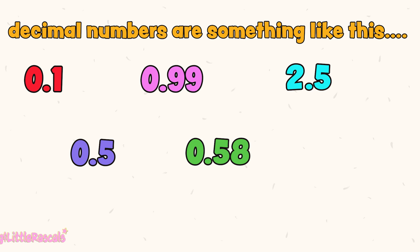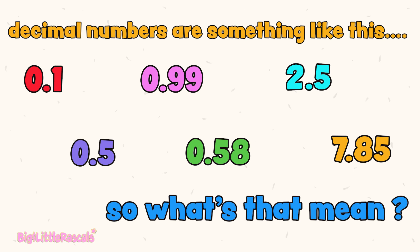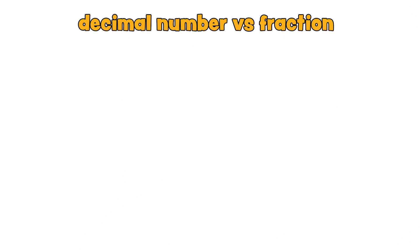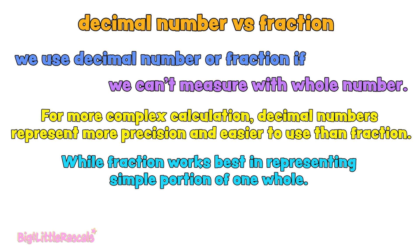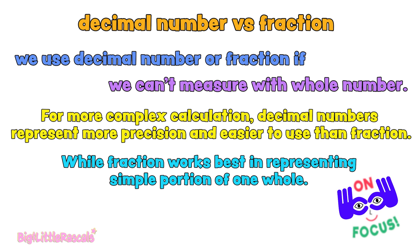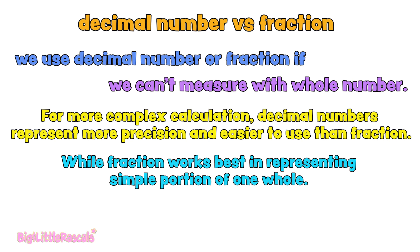Decimal numbers are something like this. Have you seen this kind of numbers before? What's that mean? Decimal number versus fraction. We use decimal numbers or fractions if we can't measure with a whole number. For more complex calculation, decimal numbers represent more precision and are easier to use than fractions. While fractions work best in representing a simple portion of one whole. If you are not familiar with fractions, not to worry — please check out our other fun learning videos on getting to know what fractions are, only at Big and Little Rascals fun videos.